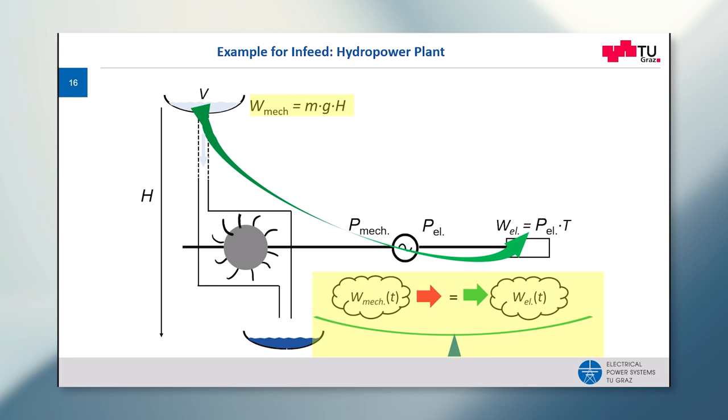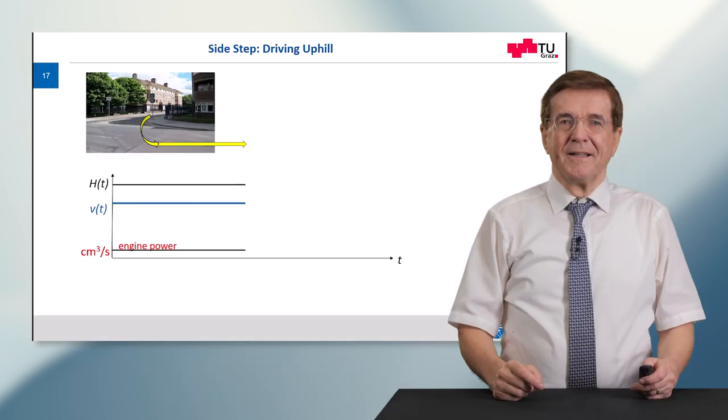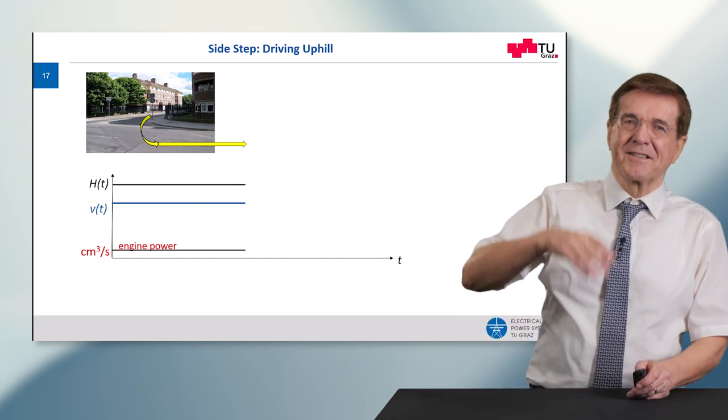But how is that done? How is this maintained that if I switch on the light, how does the whole electrical system know that it must at this very same microsecond provide electrical power, electrical energy to my place? To understand this, we take a side step.